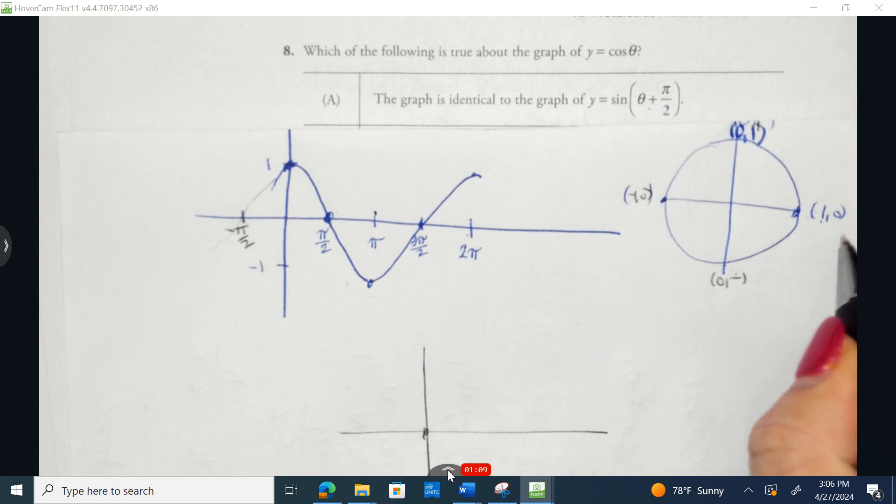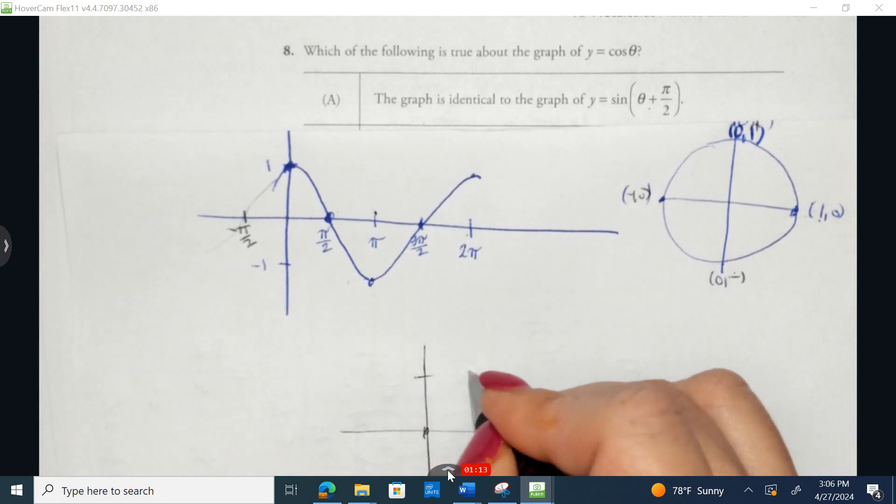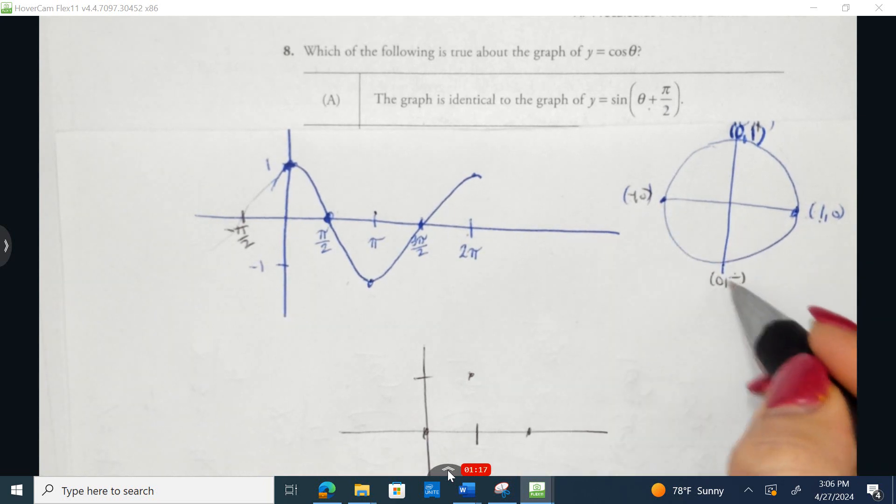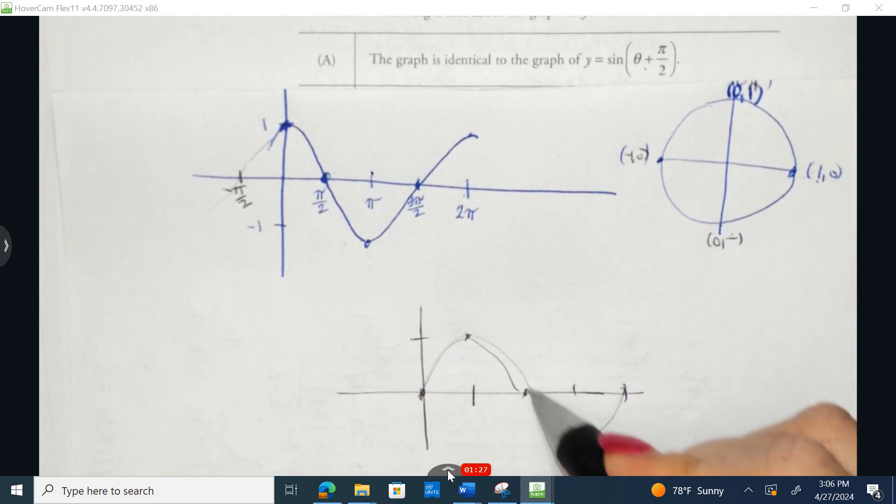Sine would start here at 0, the output's 0. Then at pi over 2, the output would be 1. At pi, the output would be back to 0. At 3 pi over 2, the output would be negative 1, and would finalize 1 revolution back to 0. So it's a hill, and that's a valley. Now if we're able to take this gray writing, and we picked it up, and we moved it to the left,